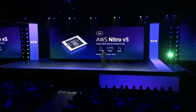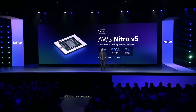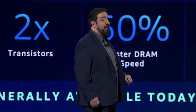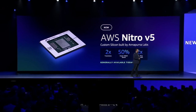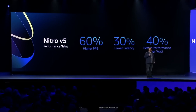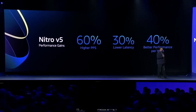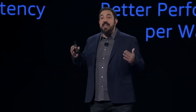This new Nitro chip continues the tradition of delivering significantly improved performance. Nitro V5 is an impressive chip. It has about twice the transistors as the previous generation Nitro chip, which gives it about twice the computational power. It also has 50% more memory bandwidth and a PCIe adapter that provides about twice the bandwidth, enabling 60% higher packet-per-second rate with a 30% reduction in packet latency — while reducing overall power.